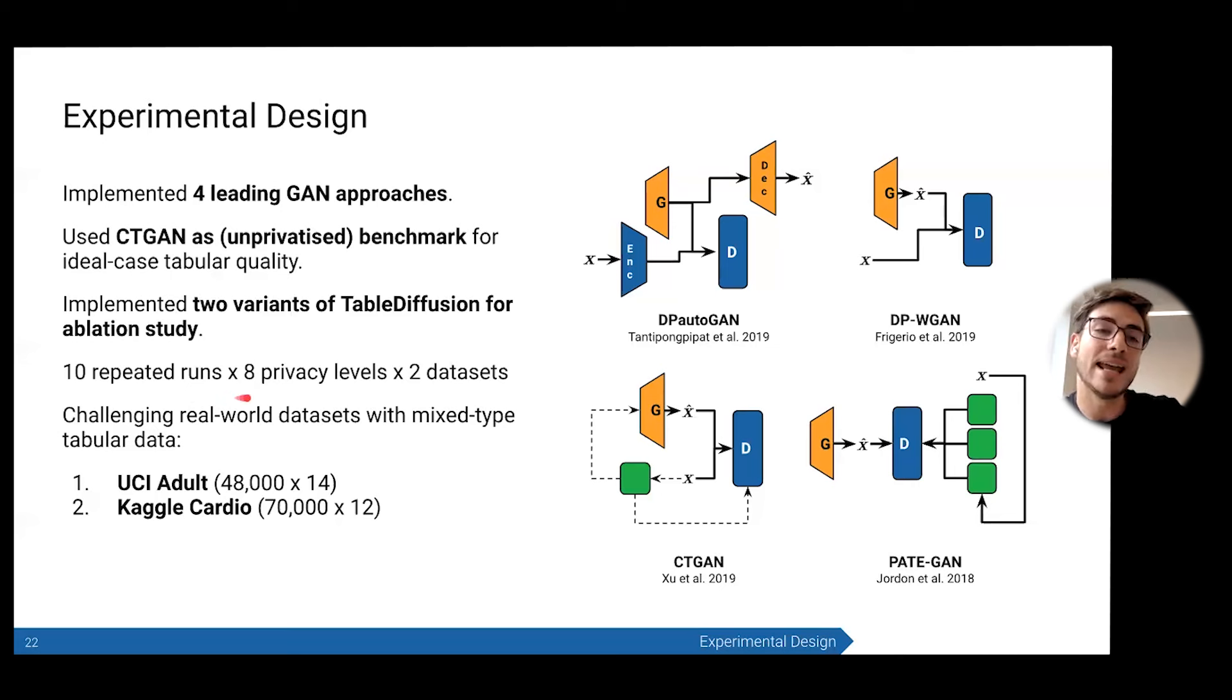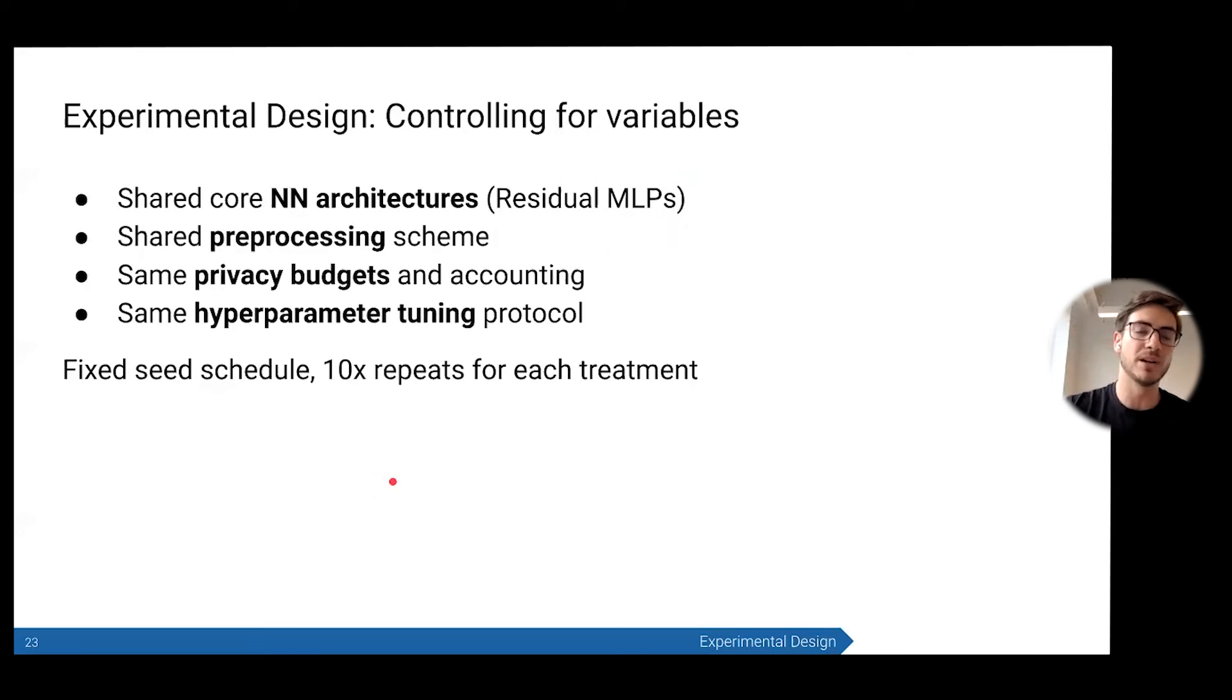In order to control for everything as much as possible, we really want to eliminate all of the random variables and all of the things that are due to implementation details. So we control as many variables as possible by using a shared core neural network architecture based on a residual MLP that was shown in CTGAN to work quite well, shared preprocessing scheme, the same privacy budgets and accounting, and the same hyperparameter tuning protocols. We also use a fixed seed schedule over the 10 repeated runs so that each model has the same seeds for each run—not the same seeds, but the same sequence of seeds—to lock down as many random variables as possible.